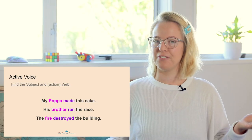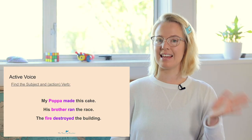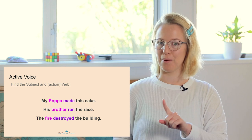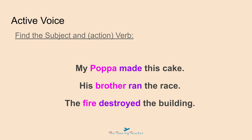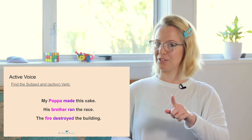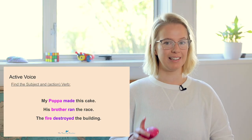The subject is in pink and the verb — which is the action — is in purple, so you can see if you got those correct. Popper is the subject and made is the verb. Brother is the subject and ran is the verb. Fire is the subject and destroyed is the verb. I wonder if you got that third one right — that one's a little bit tricky.